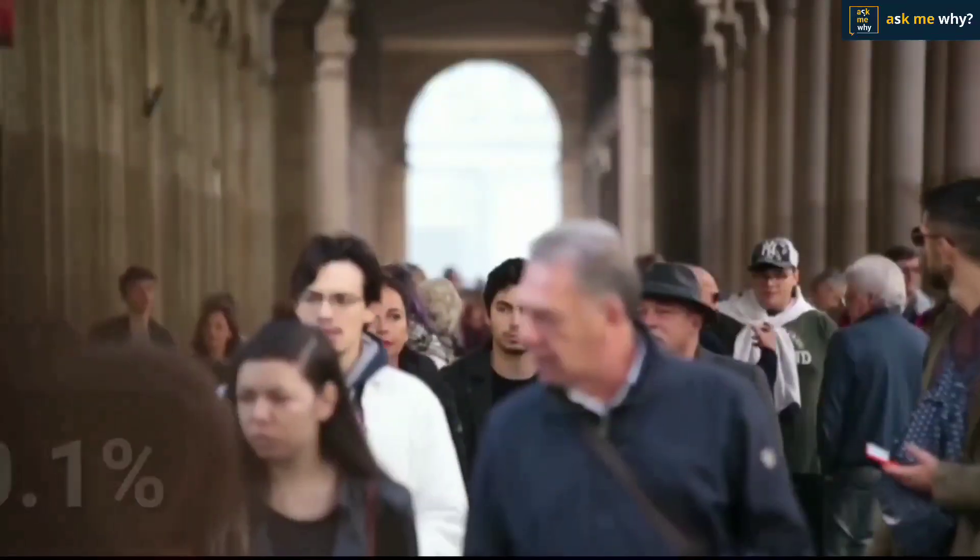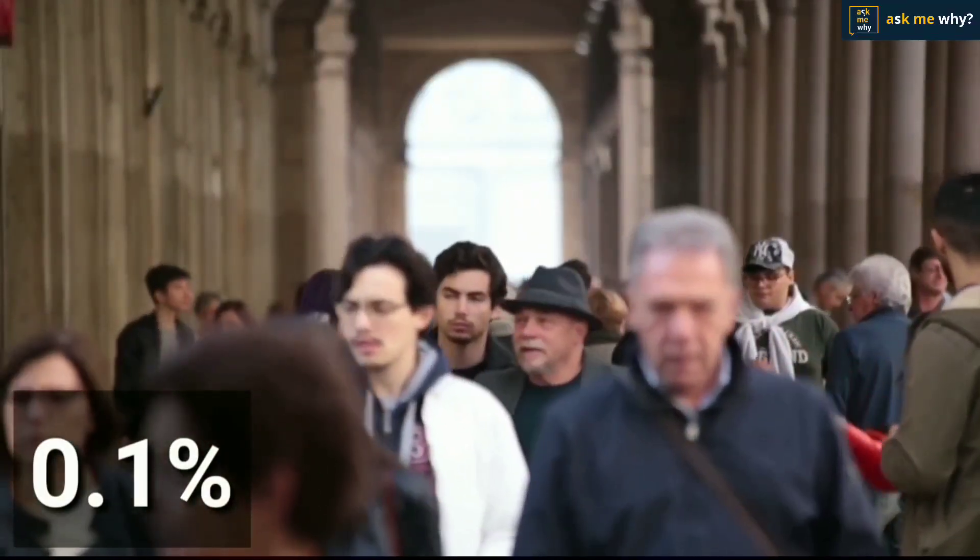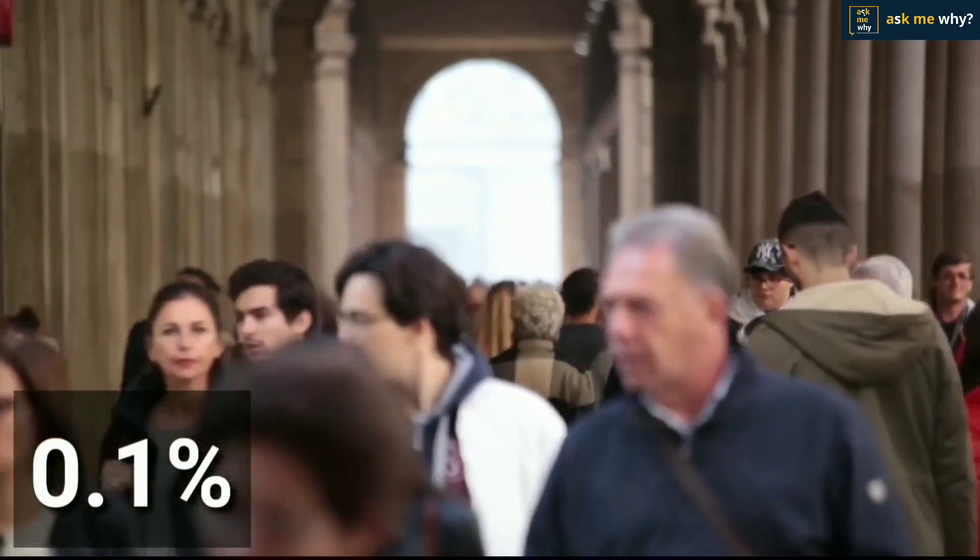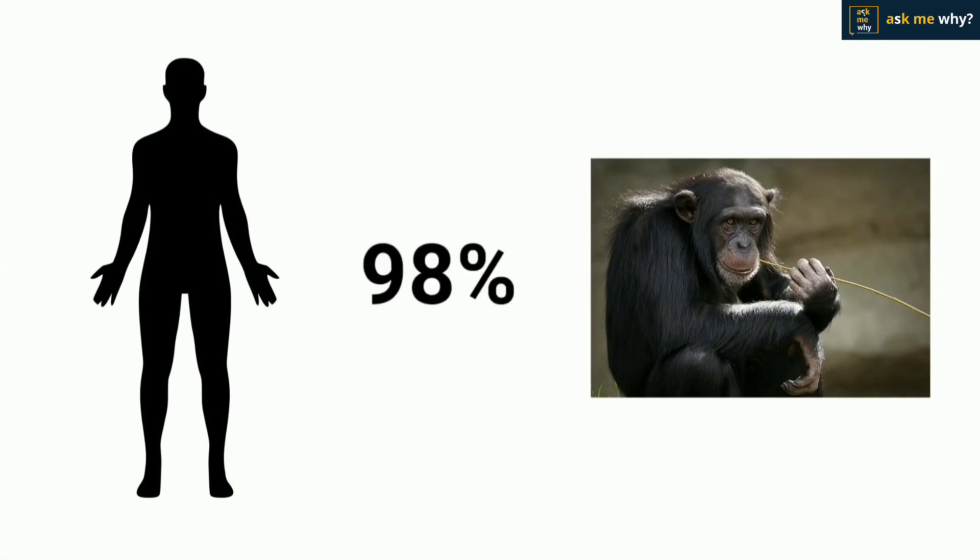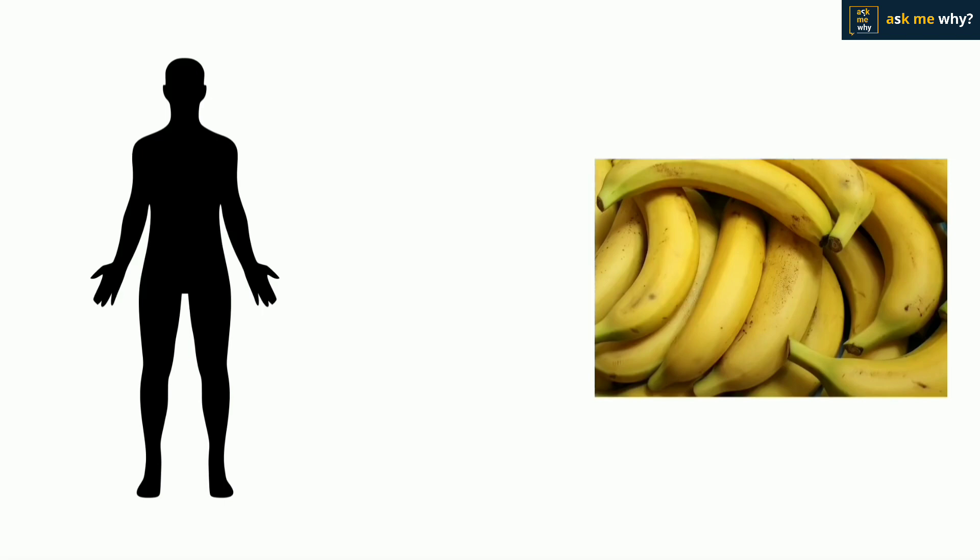The remaining 0.1% difference causes many changes in our color, height, shape, and appearance. Also, the DNA in humans is approximately 98% identical to that in gorillas. Another miracle is that human DNA matches 50% of the DNA found in bananas.